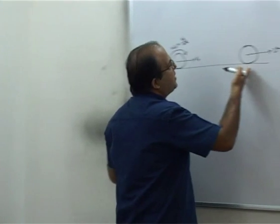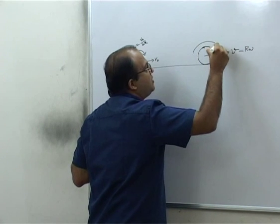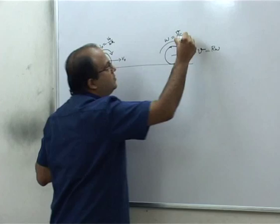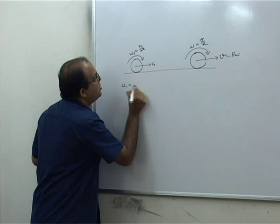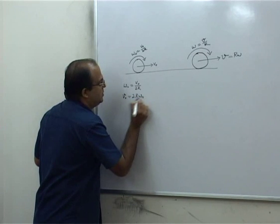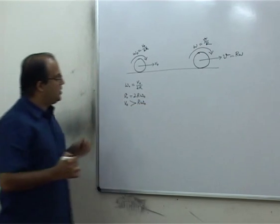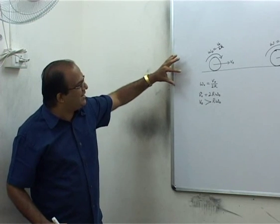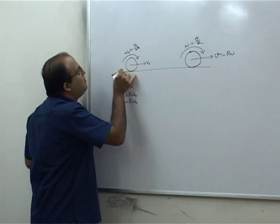The condition for rolling without slipping is v equal to r omega. So the angular velocity of the ball at this point is omega equal to v upon r. At the initial moment, omega0 is v0 upon 2r, so v0 is 2r omega0, and therefore v0 is greater than r omega0. Friction will help the rotational motion of the ball to increase omega and decrease v, so friction will act in the backward direction.